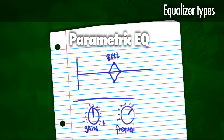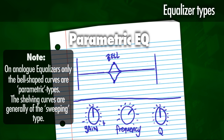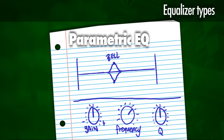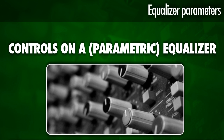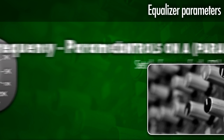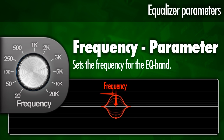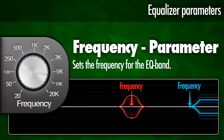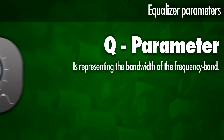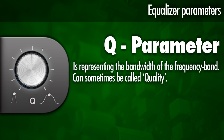Then we have a parametric equalizer, which is one of the most flexible types of EQ. They offer three controls: the frequency, the gain, and the Q value. The frequency sets the center frequency of the bell curve and the starting frequency of the shelf curve. The Q value is the bandwidth of the EQ — by some manufacturers this is called the quality.